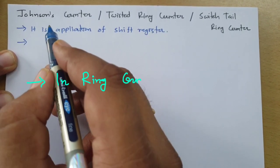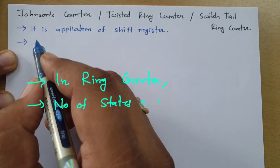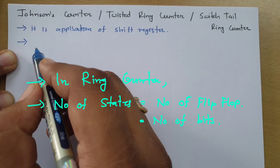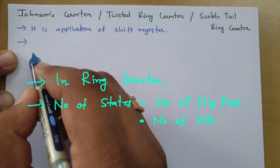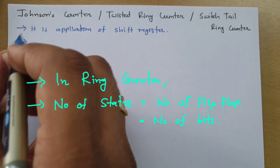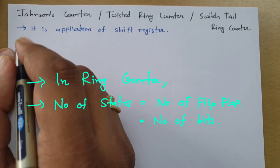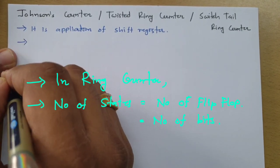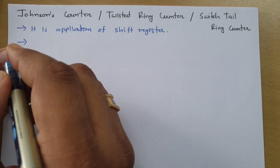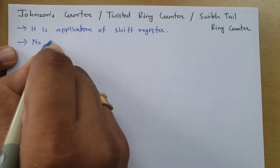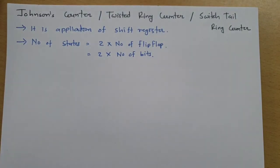In a ring counter, the number of states equals the number of flip-flops, or equivalently the number of bits. But in Johnson's counter, the number of states is twice the number of flip-flops — that is, the number of states equals twice the number of bits. Now let me explain how we can design Johnson's counter from a ring counter.